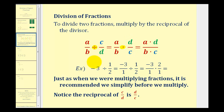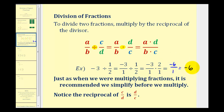For example, if we have negative three divided by one-half, the first step would be to write negative three in fraction form, so we'd have negative three over one divided by one-half. Then we convert the division to multiplication by multiplying by the reciprocal of one-half, which would be two over one. So negative three times two is negative six, one times one is one, so this quotient is equal to negative six.